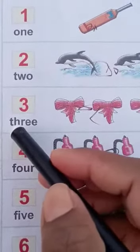Next, five. F-I-V-E, five. Here are five guns. We will count: one, two, three, four, five. Here are five guns.